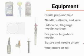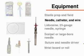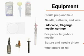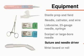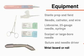For both procedures, similar equipment will be used: material for a sterile prep and a sterile field, a needle, catheter and wire, 1% lidocaine, a 25-gauge needle and 1 cc syringe, a larger bore needle or scalpel, suture and needle driver, and a wrist board or roll.